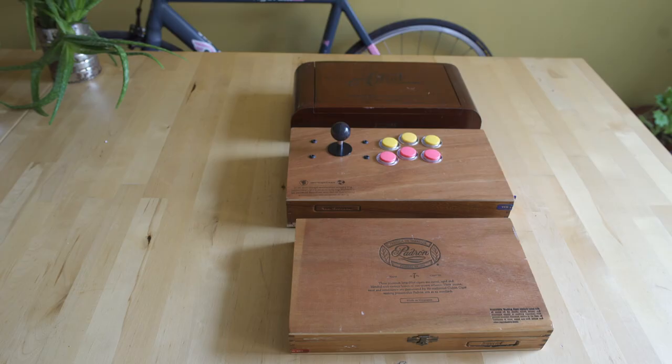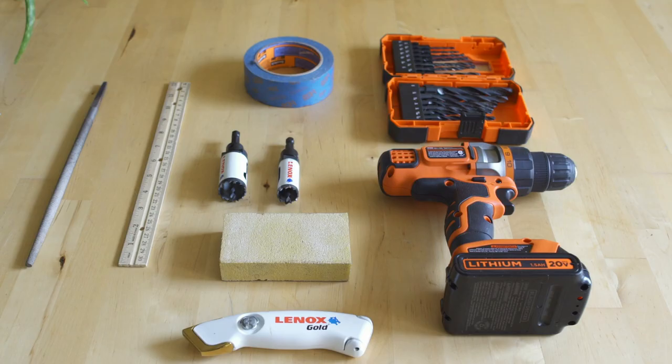Hey everybody, welcome back to Video Game Esoterica. On today's episode of On a Technicality, we're going to be looking at how to take a cigar box, convert it into a super gun arcade stick for your setup, something I really like to do and I think you guys will enjoy it as well.